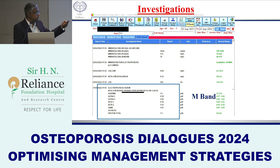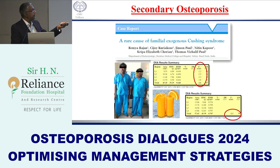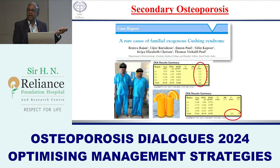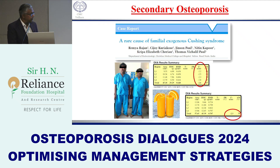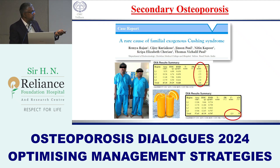Case 7: Two children presented with back pain and multiple fractures. Their mother had been purchasing dexamethasone from a medical store and giving it to them because they were not gaining weight. Both children had low bone mass and fractures — glucocorticoid-induced osteoporosis. This is an important and often overlooked cause that will be discussed further.